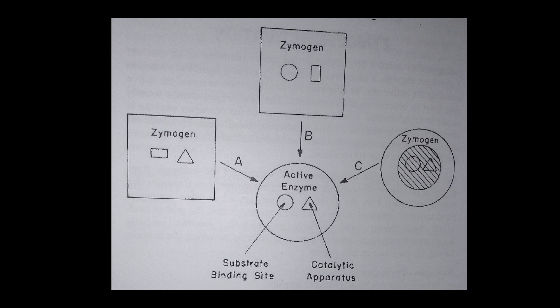Another mechanism of activating a zymogen is by removing the occlusion that is obstructing the binding of the substrate to the active site. For it to be activated, enzymes act on it to break that occlusion, and it becomes active. To summarize: the first mechanism involves changing the shape of the substrate binding site; the second mechanism involves changing the shape of the catalytic apparatus; and the third mechanism involves removing any occlusion on the zymogen so it becomes active.